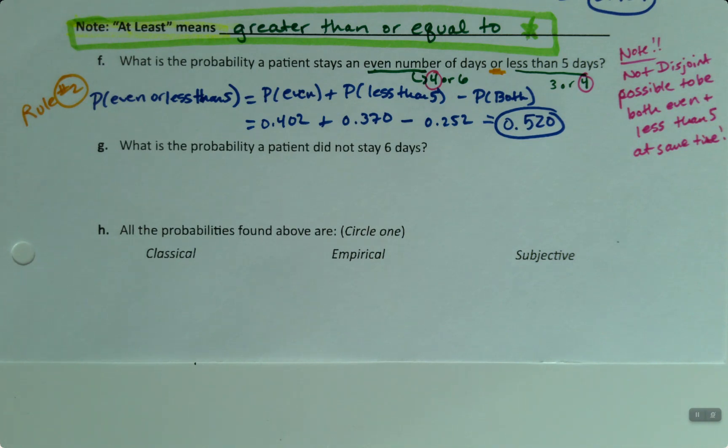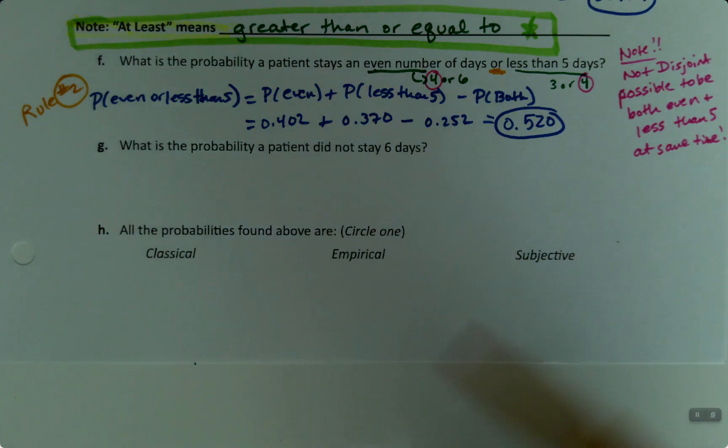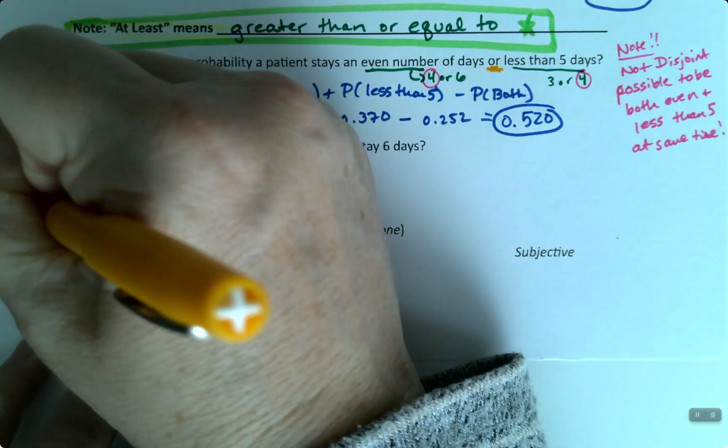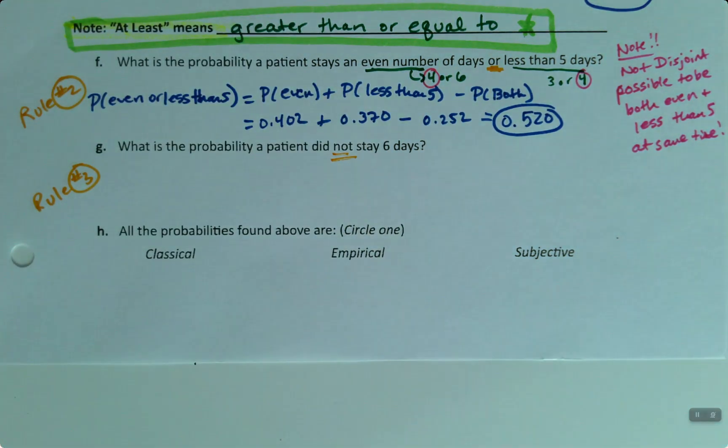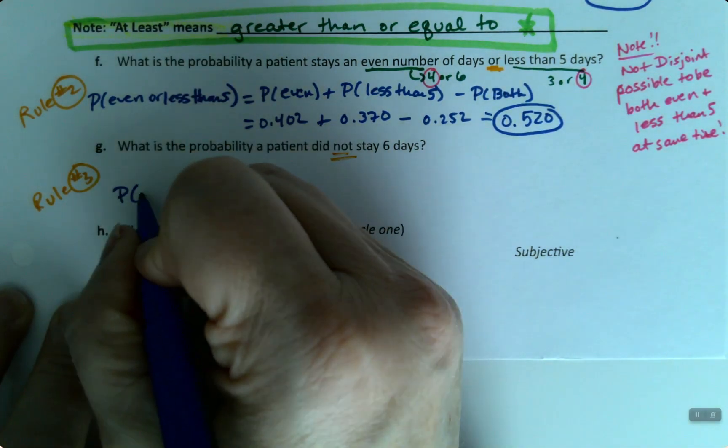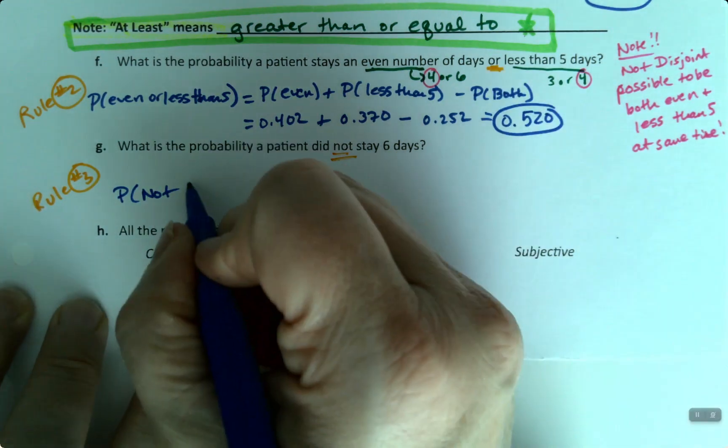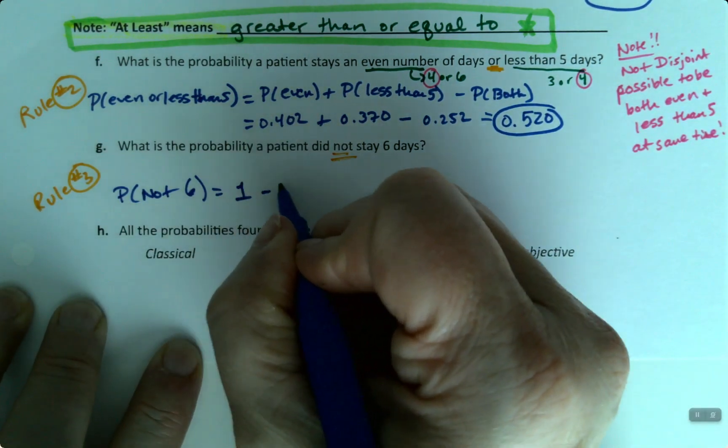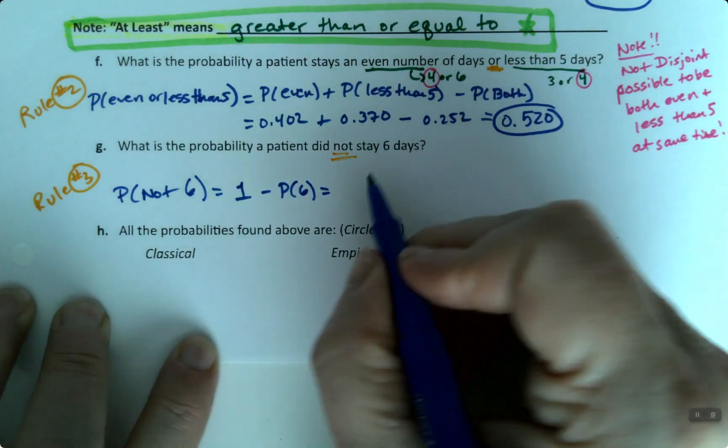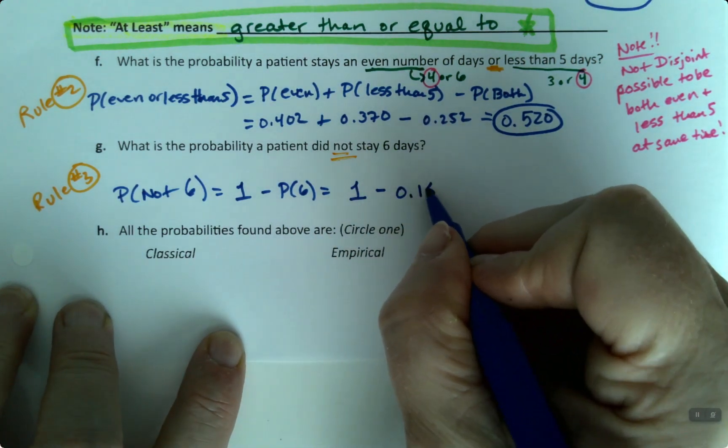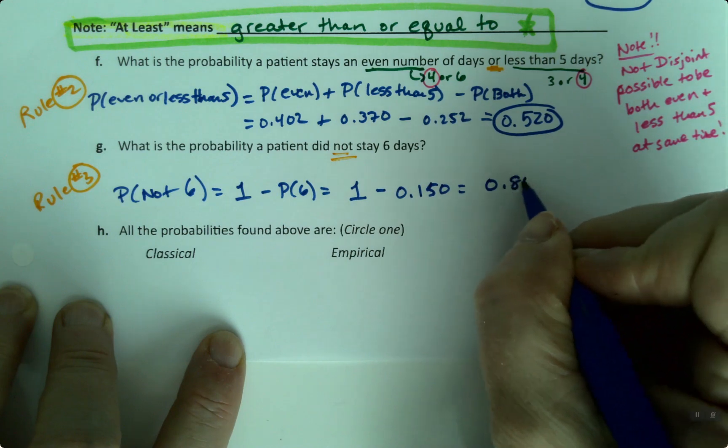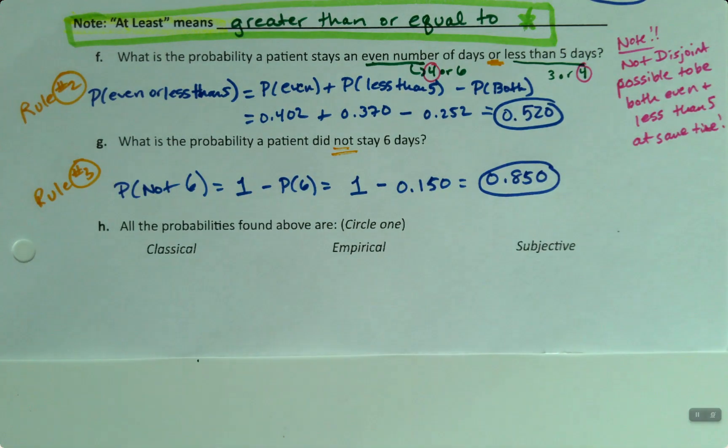What is the probability that a patient did not stay? So that's a red flag to me. Did not stay means rule number three. It's negative voice. So this is a complement. So I want the probability of not staying six days is one minus the probability of six days, which is one take away six, which was zero point one five, oh, which is zero point eight, five, oh. Easy enough.